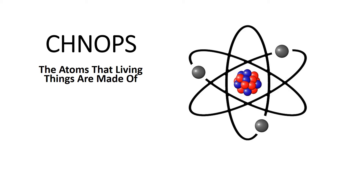This lesson is about the types of atoms that living things are made out of. In this image, this is a representation of an atom. And SHNOBS is an acronym intended to help you remember what those atoms are — the atoms that living things are made out of. We'll talk about what those are in just a moment, but first let's talk about what an atom is.